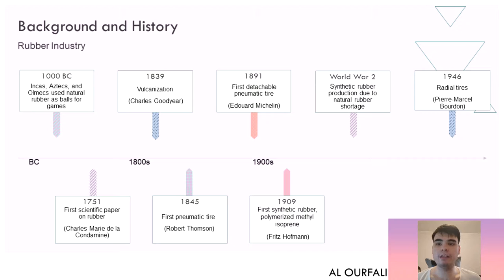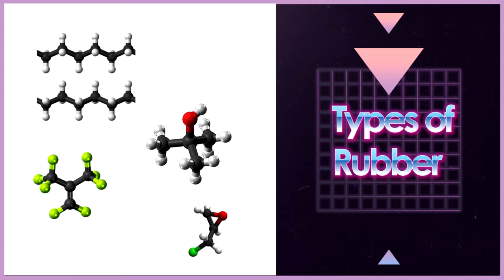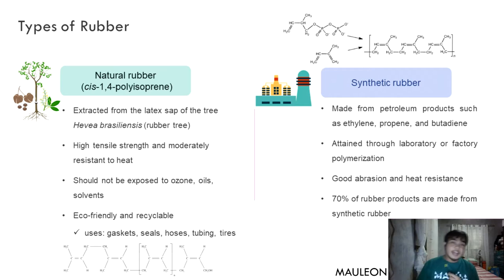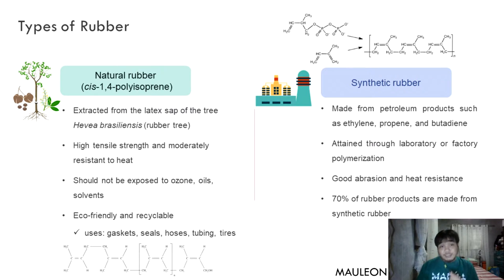During World War II, synthetic rubber production increased due to a natural rubber shortage. In 1946, radial tires were introduced by Pierre Marcel Floret.